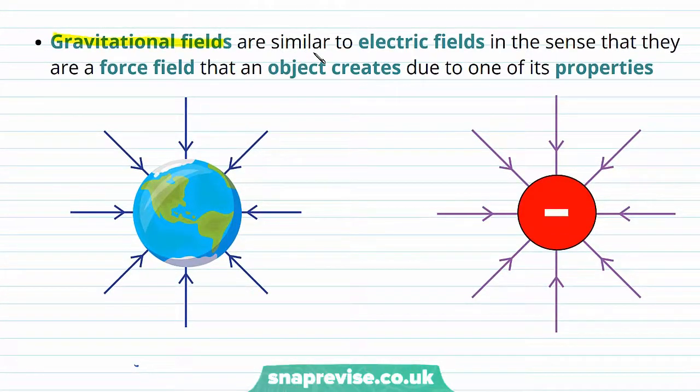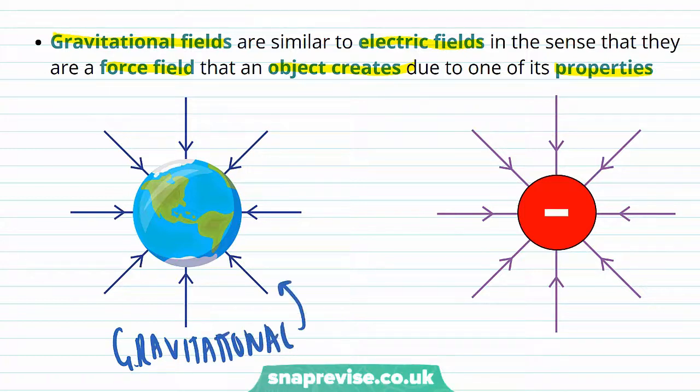Gravitational fields are similar to electric fields in the sense that they are a force field that an object creates due to one of its properties. So the gravitational field occurs due to an object's mass, whereas an electric field occurs due to an object's charge.